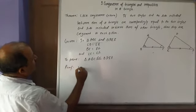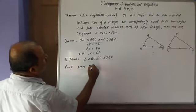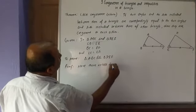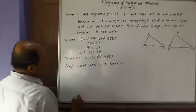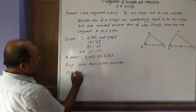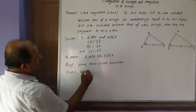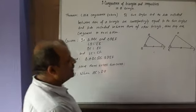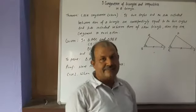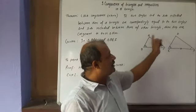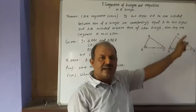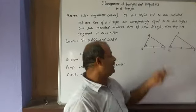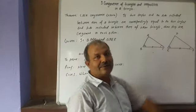Case 1: when AC equals DF. In this case, we need to prove that AC equals DF. If AC equals DF, then triangle ABC and triangle DEF satisfy the SAS conditions directly.